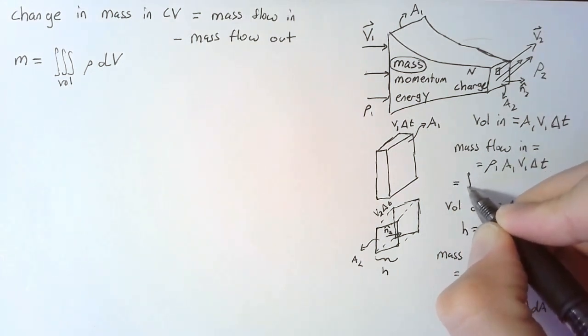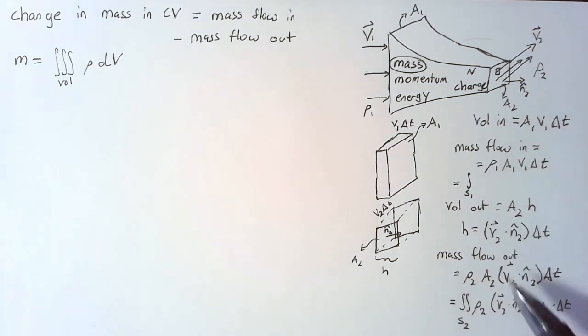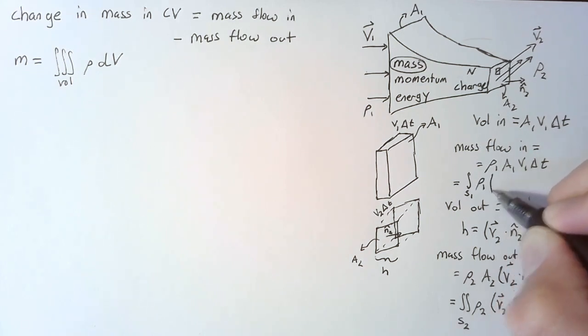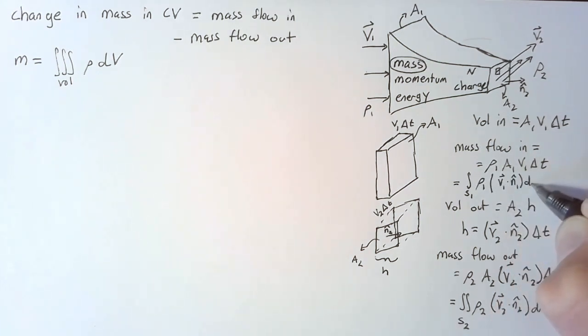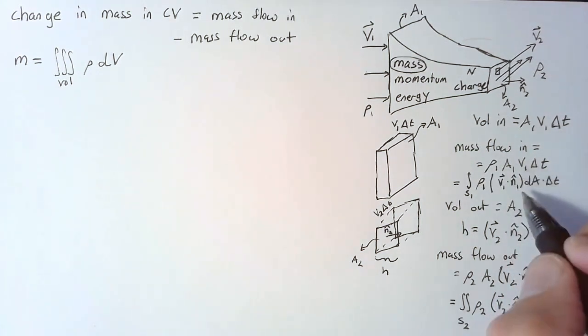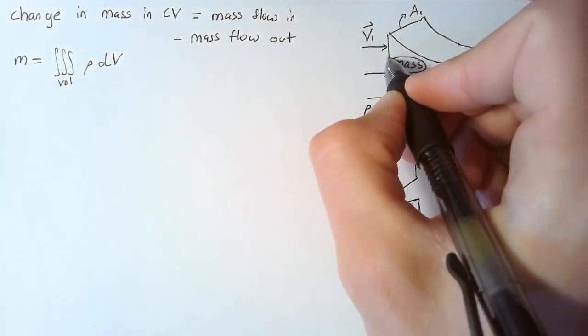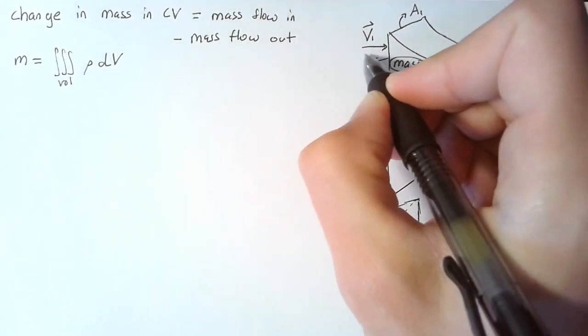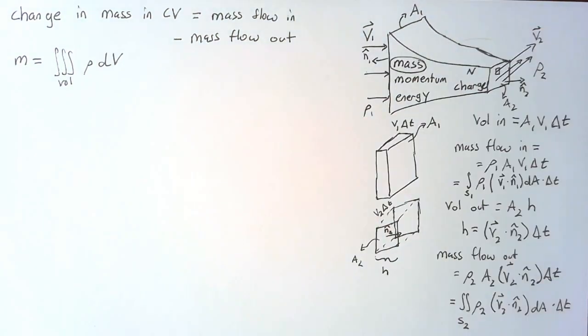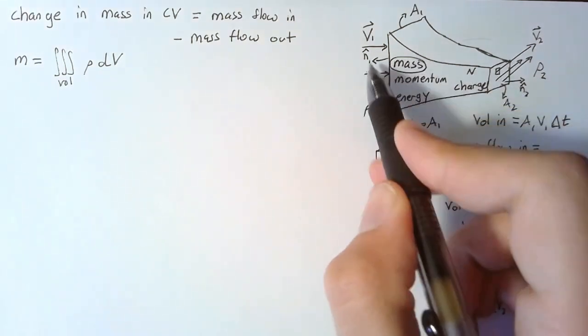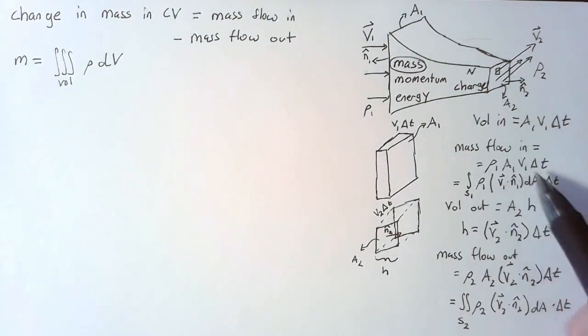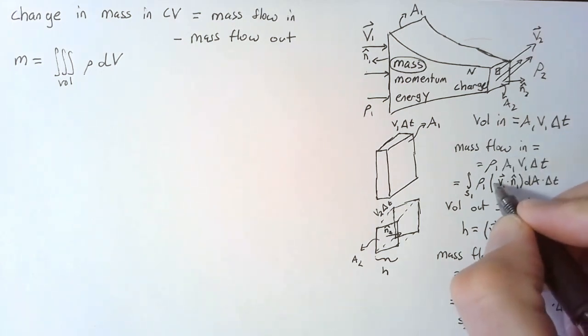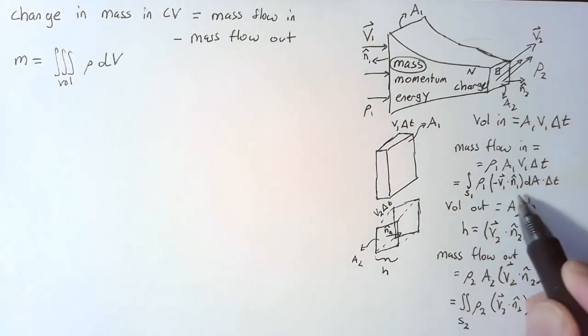We can do the same thing for our mass flow in. This is going to be equal to the integral over s1. Just like down here, we'll have rho vn multiplied by dA: rho1, v1 dotted with n1, dA, delta t. Now this normal vector n1 is going to be pointing away from our surface. That's just a consistent direction so that we're always the same with our normal vectors. So v1 dot n1 in this case is actually a negative. So if we're calculating the mass flow in, we need to include a negative sign in this dot product.